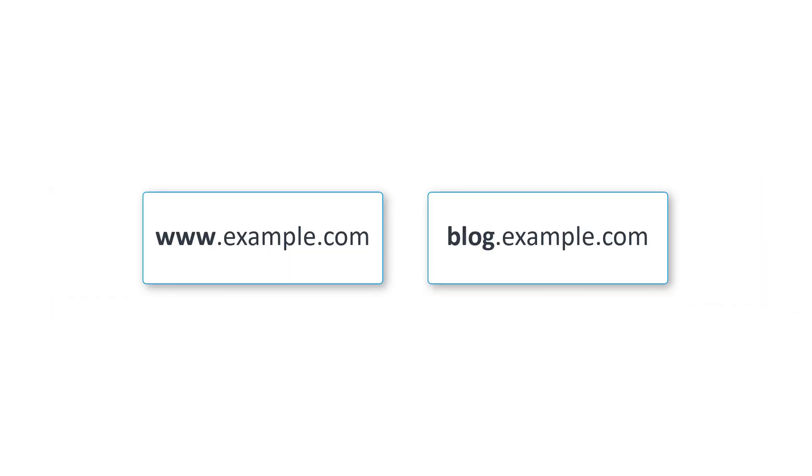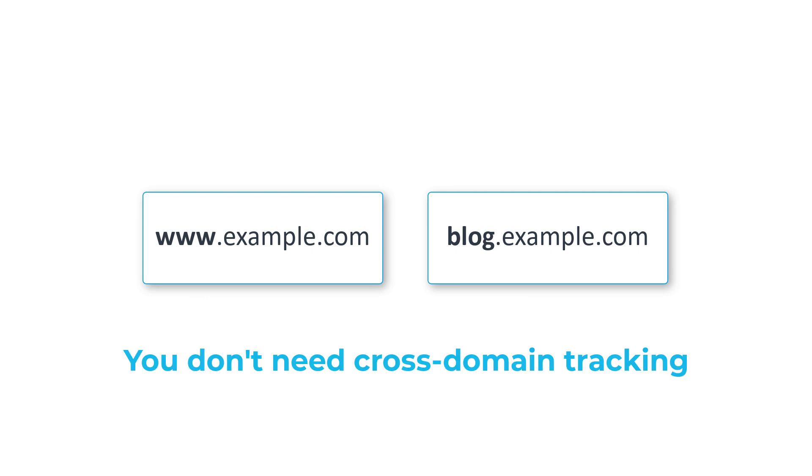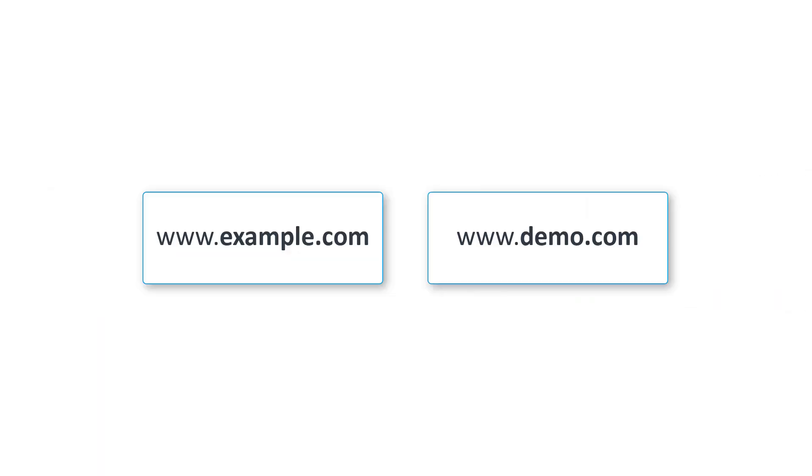Before we jump into the configuration of cross domain tracking, there's a very important thing you should know. If your business operates on multiple websites but they are using subdomains of the same domain, that is not cross domain tracking. Google Analytics 4 handles that automatically. Cross domain tracking involves only completely different domains.